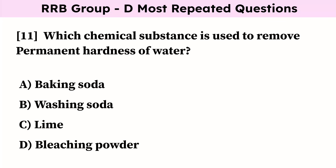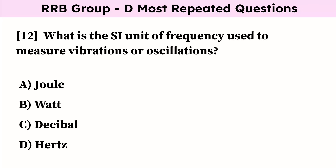Which chemical substance is used to remove permanent hardness of water? Correct answer is washing soda. What is the SI unit of frequency used to measure vibrations or oscillations? Correct answer is hertz.